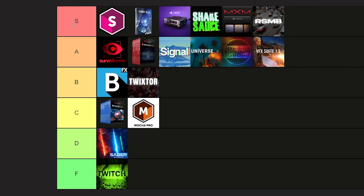Finally here's the tier list. In S I have Sapphire, Element 3D, FX Console, 6S2, MXM, and RSMB. In A is Surveillance, Magic Bullet, Switch, Signal, Universe, Deep Glow, and VFX Switch. In B we have BCC and Twixter. In C we have Trapcode Suite and Mocha Pro. In D we have Saber. And in F we have Twitch. That's my personal ranking - let me know if this satisfies your opinions or if you disagree with any rank. If you liked this video please hit the like button, it was a fun video. See you in the next video.